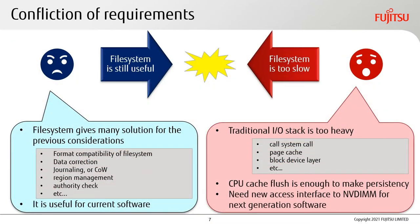As a result, there is a conflict of requirements. File systems offer many solutions for these considerations: format compatibility, data correction, journaling or copy-on-write, extent management, authority checks, and more — making them useful for current software. However, file systems are too slow; the traditional IO stack is too heavy. CPU cache flush is enough to ensure persistency, so a new access interface to NVDIMM is needed for next-generation software.